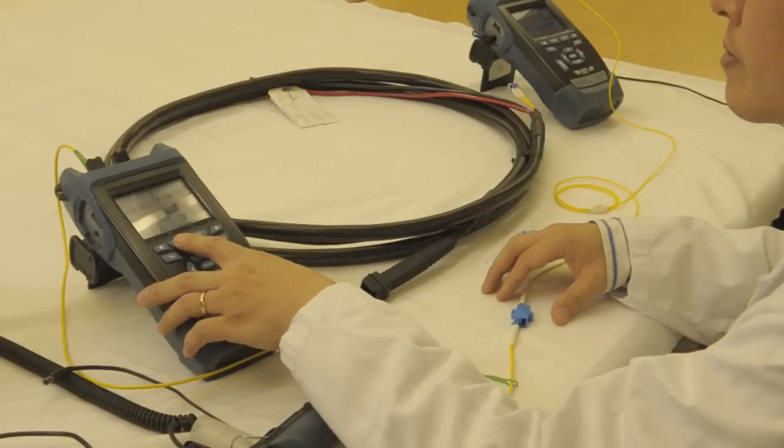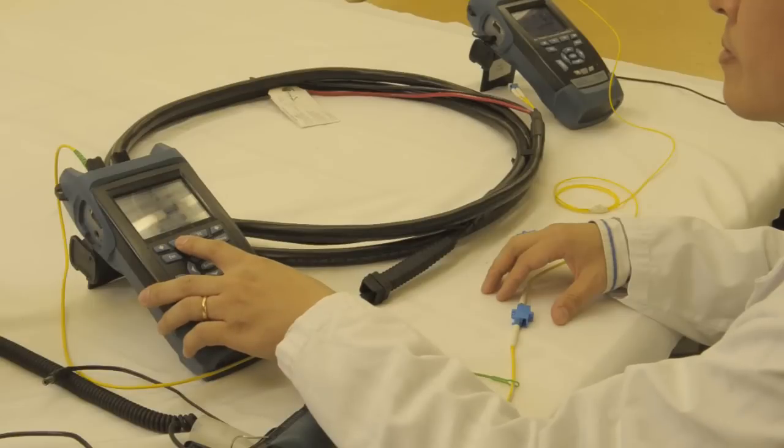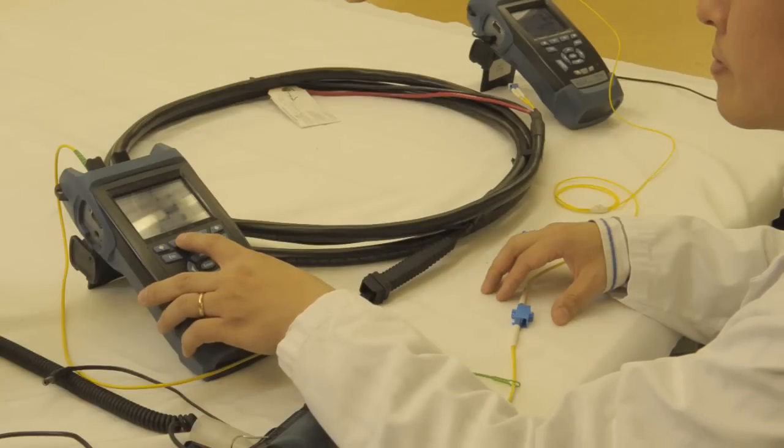In case you have a problem in the field, if it passes on one wavelength and doesn't pass on the other, you might have a bend—either a macro bend or a micro bend—in your cable plant, and it will be easier to troubleshoot. So right now we're going to go ahead and reference the meter.